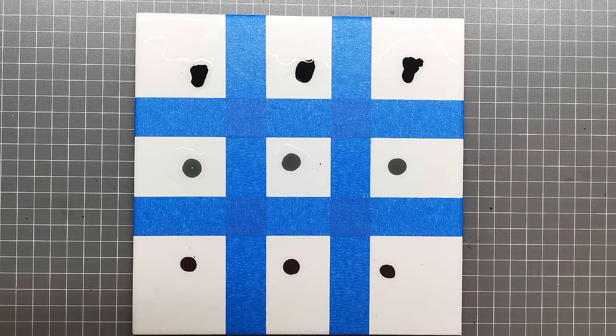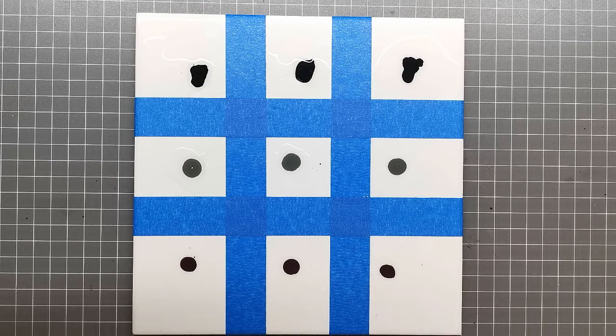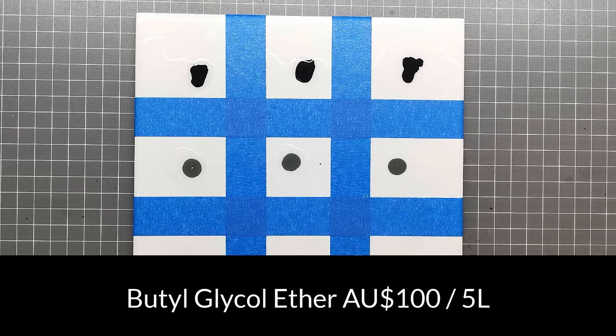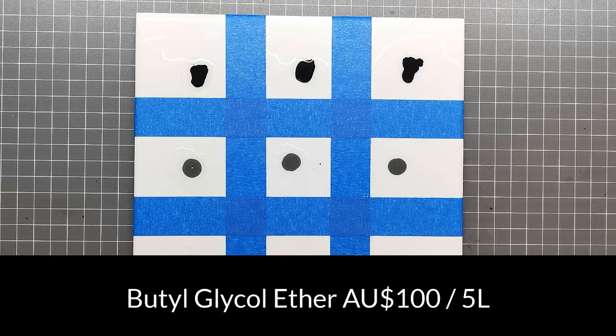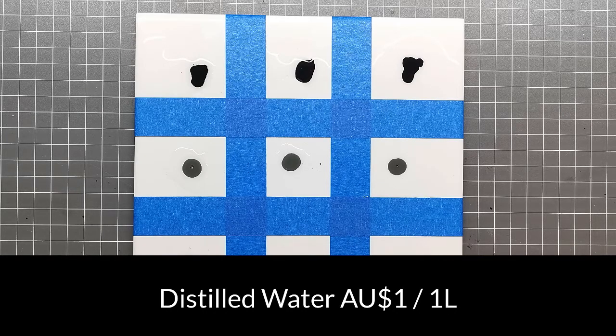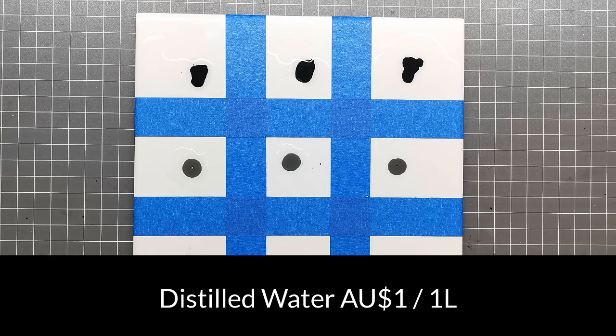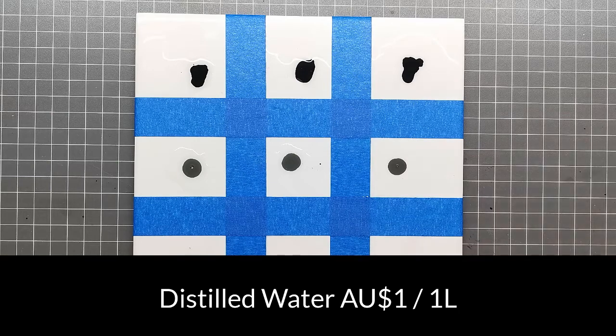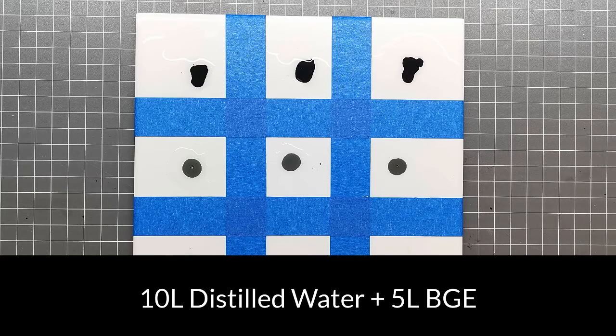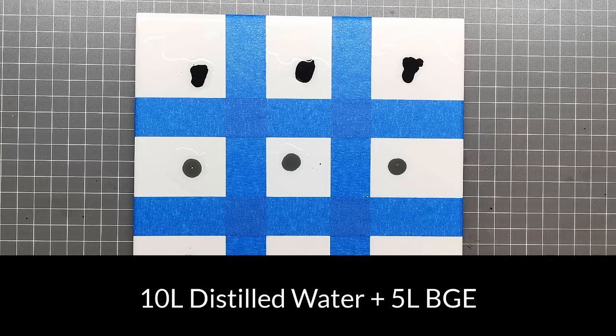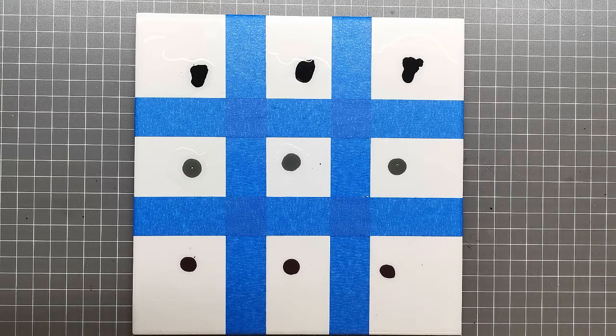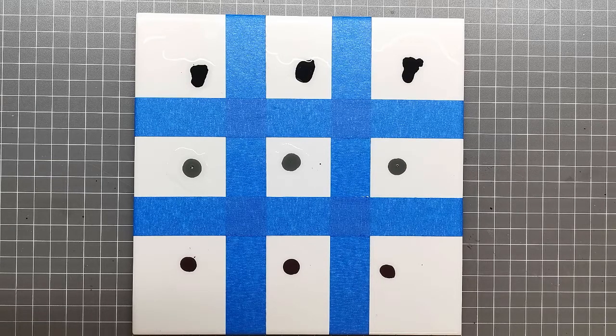While that's happening, I'll talk about the cost of the homebrew versus the Vallejo airbrush cleaner. The butyl glycol ether cost me $100 for 5 liters, and the distilled water was about $2 Australian for 2 liters, essentially a dollar a liter. Because the ratio is two-to-one, I need 10 liters of distilled water for every 5 liters of glycol ether.